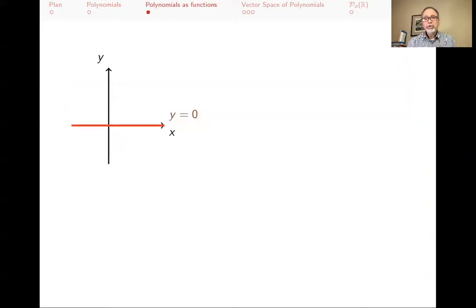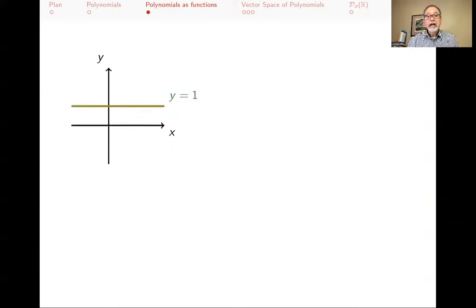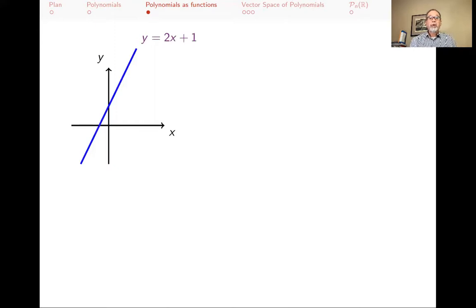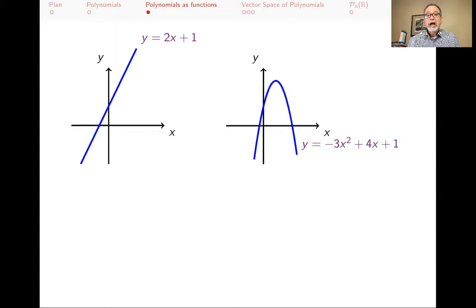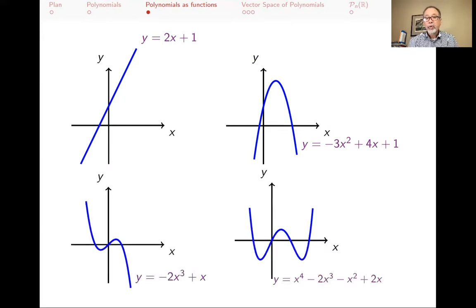You're used to seeing polynomials as functions. The zero polynomial, y = 0, graphed in two dimensions, is just the x-axis — that's the polynomial with no degree. Polynomials of degree 0 are things like y = 1 or y = 47 — horizontal lines. Polynomials of degree 1 are other kinds of lines, like y = 2x + 1. You've seen quadratics, which are parabolas — something like y = −3x² + 4x + 1 — and cubics and higher.